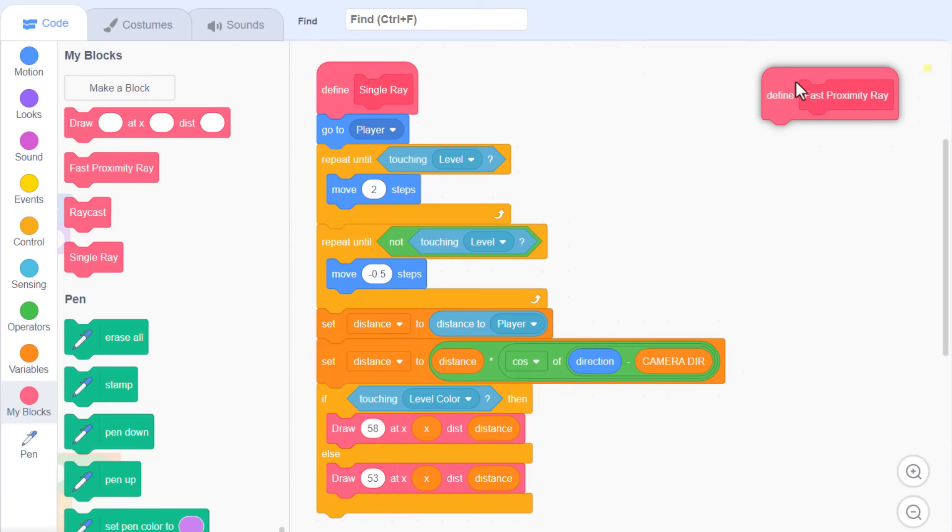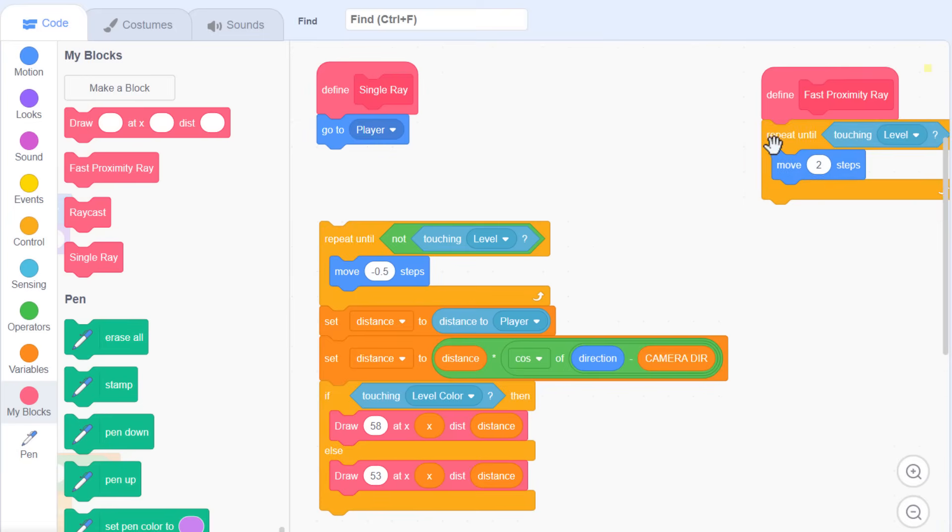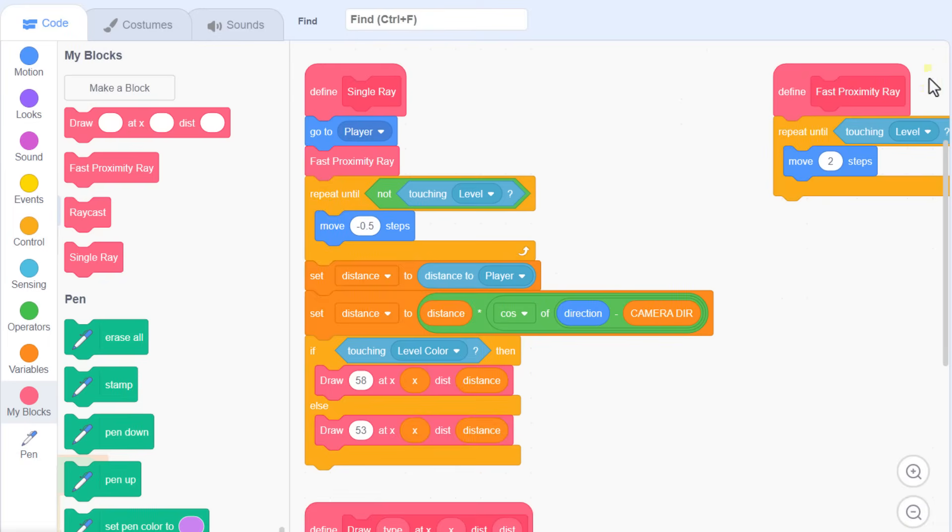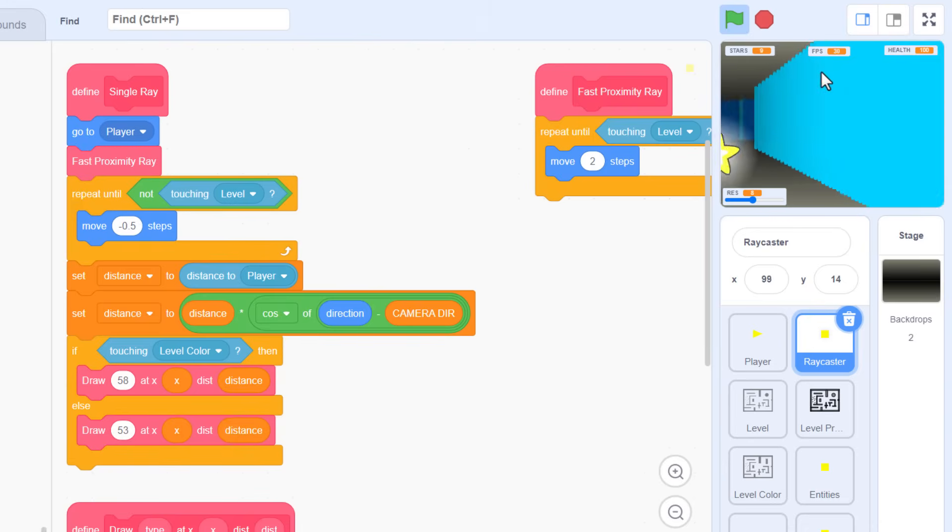Right then, make a new custom block, and name it Fast Proximity Ray. And we tick the run without screen refresh. Ok, so it's this little repeat loop we are replacing. So, we'll pull that out into the new define block, replacing it with a call to the Fast Proximity Ray script itself. Yeah, we can test that to confirm it works just the same as before. Cool, that's fine.